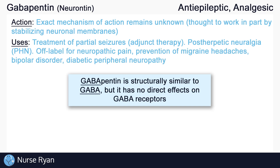Some off-label uses of gabapentin include neuropathic pain, prevention of migraine headaches, bipolar disorder, and diabetic peripheral neuropathy.